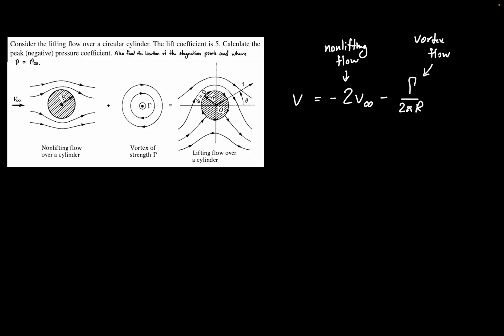Next, we work with the hint that the lift coefficient is equal to 5. CL equals 5, but CL can also be related to gamma divided by R times V infinity. So this can be rewritten as gamma divided by R, which is equal to 5 times the free stream velocity.